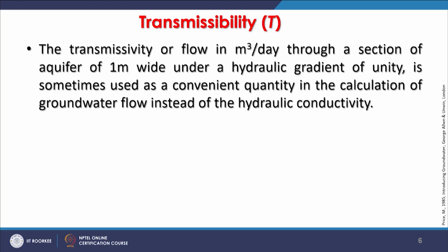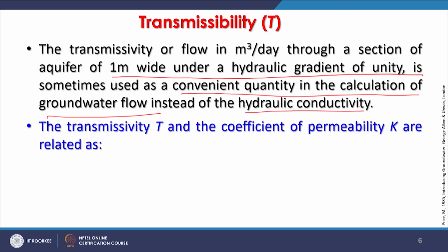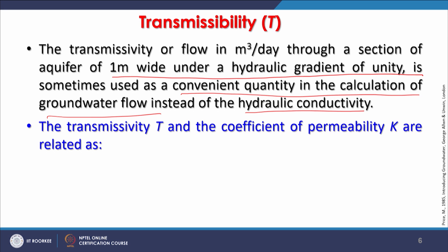Transmissibility — the flow in cubic meters per day per meter, or square meters per day — through a section of aquifer one meter wide under a unit hydraulic gradient is a convenient quantity in groundwater flow calculations, used instead of hydraulic conductivity alone. Transmissibility T and the coefficient of permeability K are related simply as T = K × B.